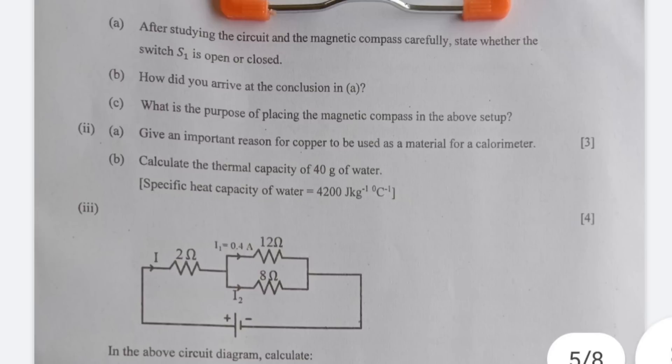What is the purpose of placing the magnetic compass in the above setup? The deflection in the compass indicates that the coil is behaving as a magnet which is possible only on the passage of current. So that's as far as this particular question is concerned.